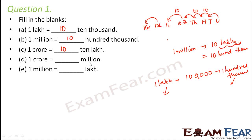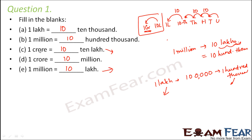1 crore is equal to dash million. 1 million is equal to 10 lakhs. Looking at this, 1 crore is equal to 10 lakhs and 10 lakhs is equal to 1 million. So 1 crore would actually mean 10 million. Why? Because 1 crore is equal to 10 × 10 lakhs, and 10 lakhs is equal to 1 million. So this 10 lakh can be replaced with 1 million, and you are left with 10 million. So 1 crore is equal to 10 million.